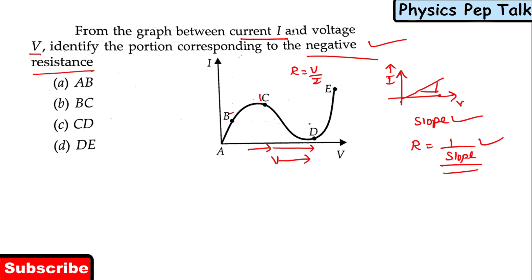From D onward, Ohm's law is valid again — I is directly proportional to V. But in the C to D region, Ohm's law is not valid. So I can choose option C as the correct answer for this question.